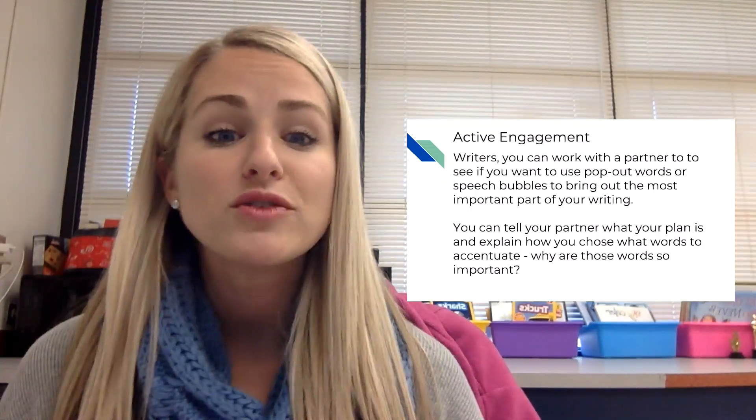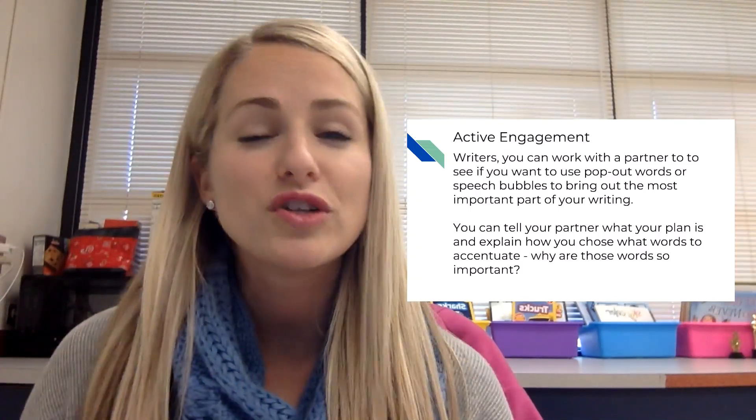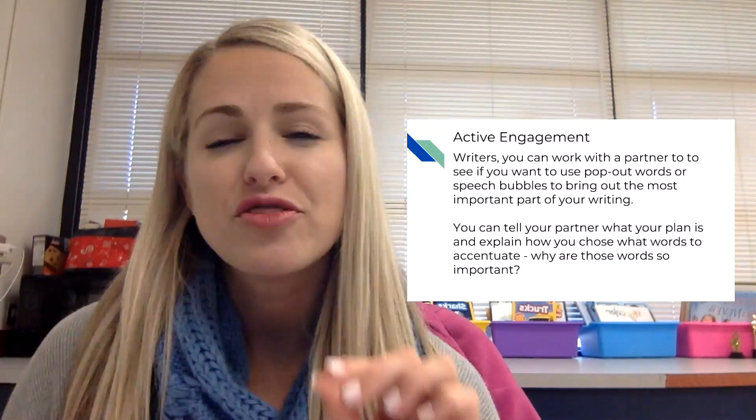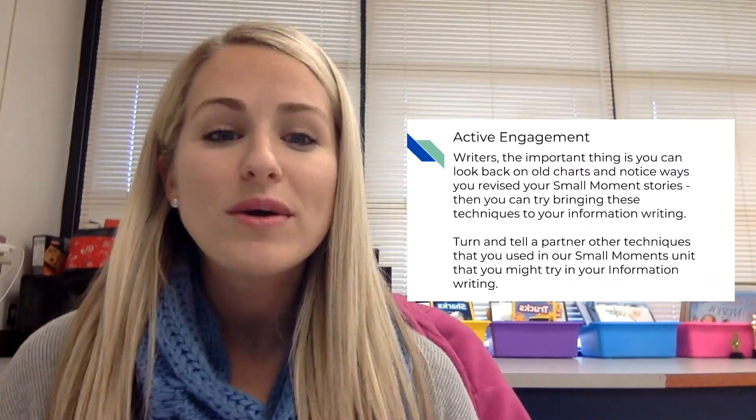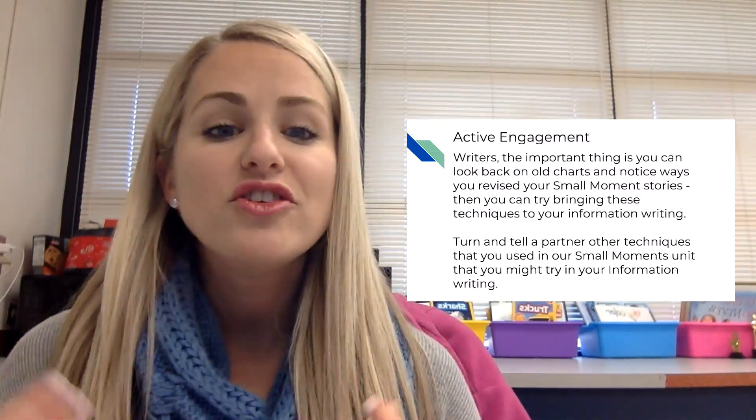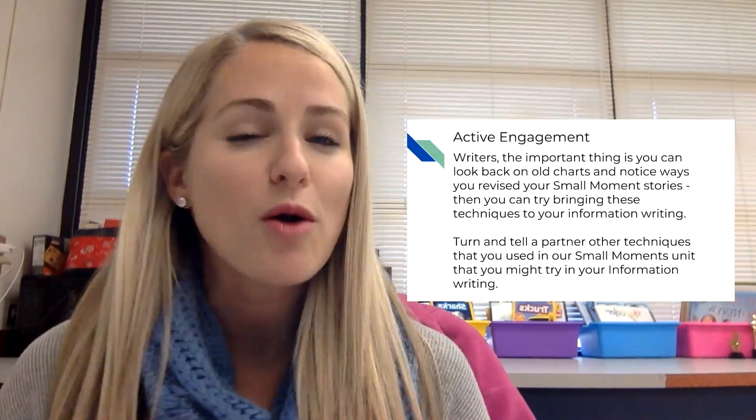Writers, you can work with a partner to see if you want to use pop-out words or speech bubbles to make the most important part of your writing stand out. Tell your partner what your plan is and explain how you chose what words to accentuate — what made you realize those words are so important and should stand out or be used in speech bubbles? The important thing is you can always look back at old charts and notice the ways that you revised your small moment stories, and then try bringing these techniques to your information writing. Turn and tell a partner: what are some techniques you used in your small moments unit that you might try in your information writing?